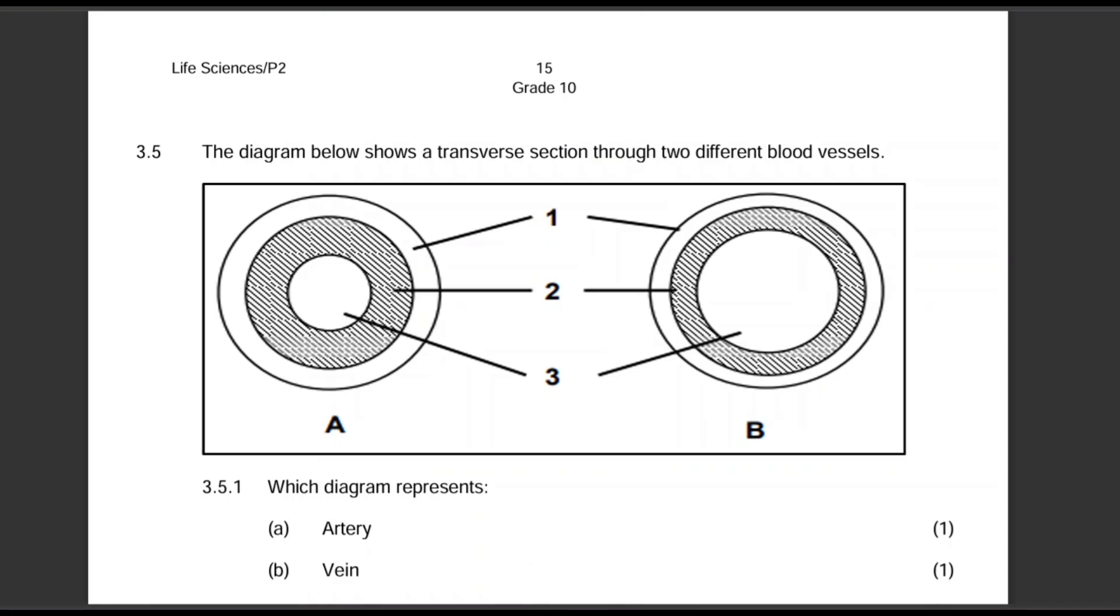Hello everyone, my name is Assisi Pombingedele and welcome to my YouTube channel. In today's video guys, we are going to be answering this exam question from a previous life sciences exam paper 3.5. The diagram below shows a transverse section through two different blood vessels. Obviously this is part of the circulatory system or the transport system in animals. I think that's what we call it in grade 10.